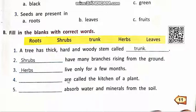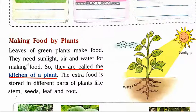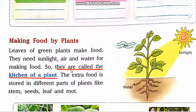Number 4. Dash are called the kitchen of plant. Students, we read here — leaves of green plants make food. Green plants ke leaves jo hain, wo food banate hain. They need sunlight, air and water for making food. So they are called the kitchen of plant — leaves of the green plant.